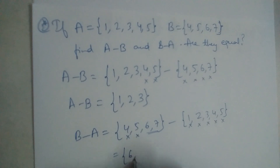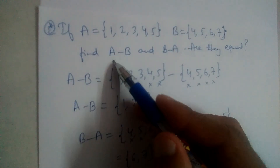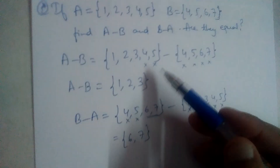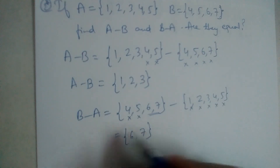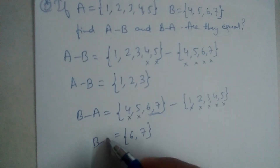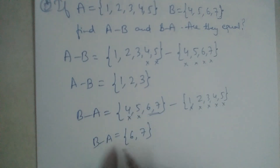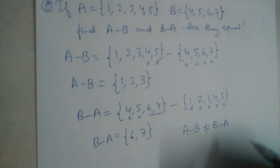We found A minus B and we found B minus A. Are they equal? A minus B is {1, 2, 3} and B minus A is {6, 7}. So no, A minus B is not equal to B minus A.